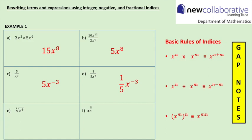Part e: the cube root of x to the power of 4 is x to the power of 4 to the power of a third, or x to the power of 4 over 3. Part f: x to the power of 3 over 4 is the same as saying the fourth root of x cubed.